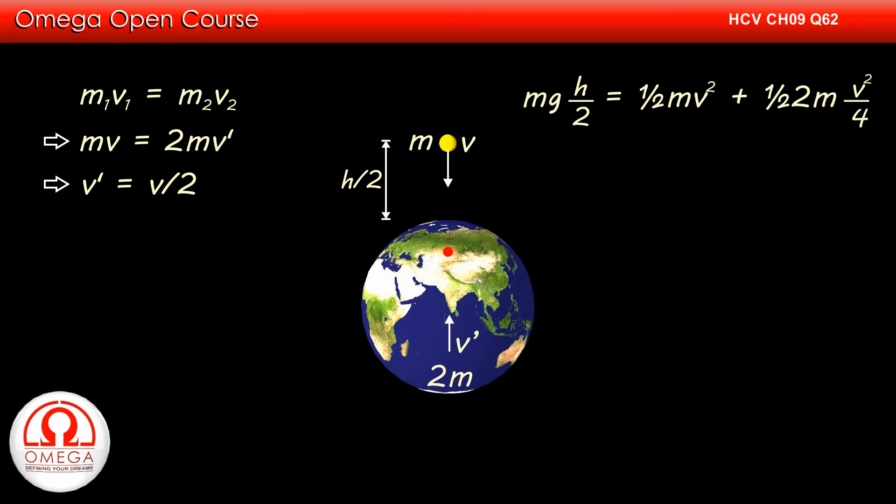From conservation of energy, we know that the change in gravitational potential energy of the earth-block system is equal to the sum of kinetic energy gained by the earth and the block.